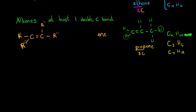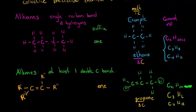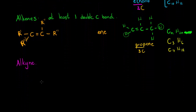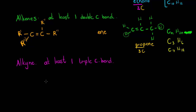The last of the hydrocarbons we are going to look at is the alkyne functional group. Alkynes have at least one triple carbon bond. Each carbon in the triple bond has only one valence electron left to share with a substituent group — a substituent group being a number of bonds between carbon and hydrogen, or just hydrogen, or it can represent an alkyl branch.